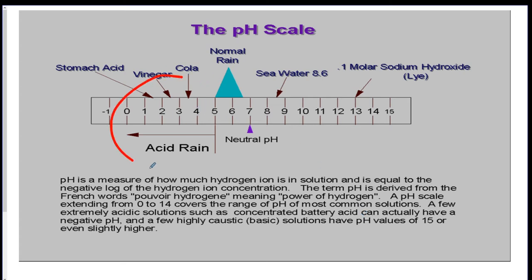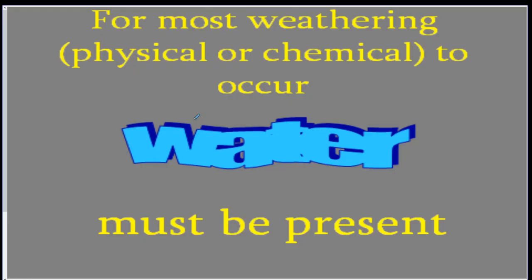Don't think of acid rain like it's going to dissolve your skin — it's just on a pH scale. Acidic means it has a lower pH. Normal neutral is 7. A Coca-Cola is 3.5. So it doesn't necessarily have to mean very acidic for acid rain — it's anywhere under 5. The more acidic, the lower the number. For most weathering, we need water. Water is really important — it does a lot of breaking down of stuff.